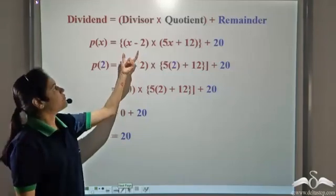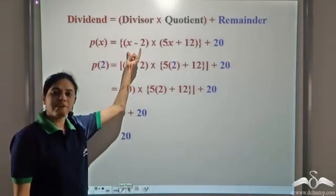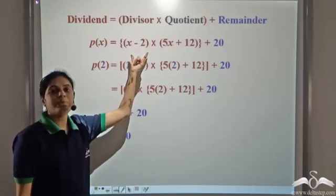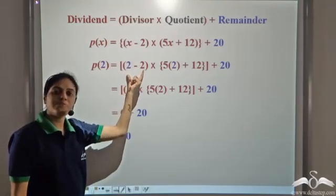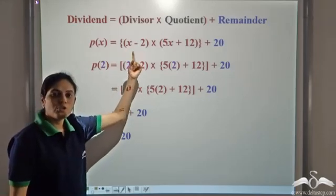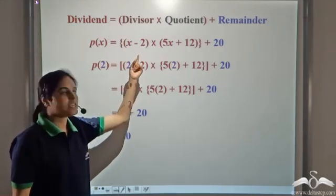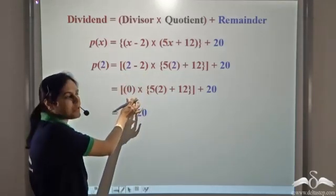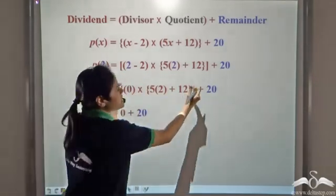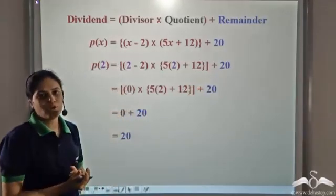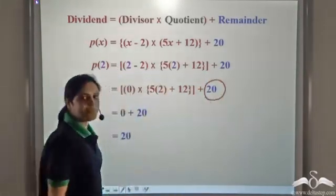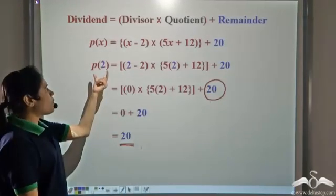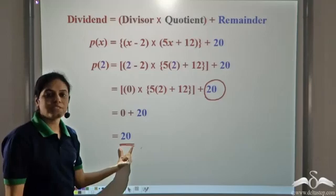Note a few things. We have a linear divisor here, which is x minus 2. When we substitute 2 in place of x, this part becomes 0 because it is x minus 2 — substituting x equal to 2 gives 2 minus 2, hence 0. Zero into anything is 0, so this entire part becomes 0 and we are left with only the remainder.